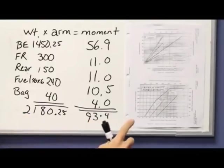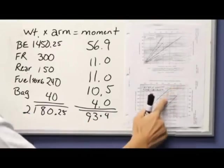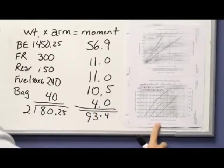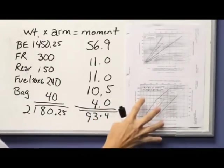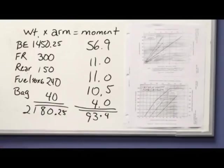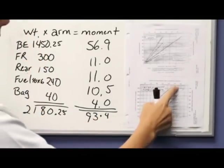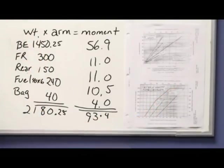Now that we've added up our total weight and added up our total moment, we need to make sure that these two numbers fit in this envelope right here. If you look at the side it says weight, and down here it says moment. So this style chart, I do not have to do that final division where I take the total moment and divide it by the total weight, because I already have the numbers to fit in here to make sure that I'm within the envelope.